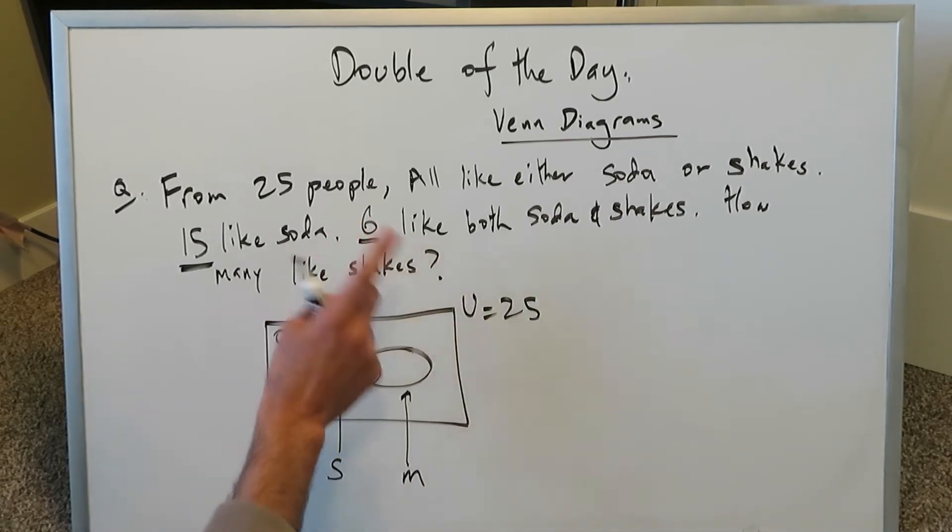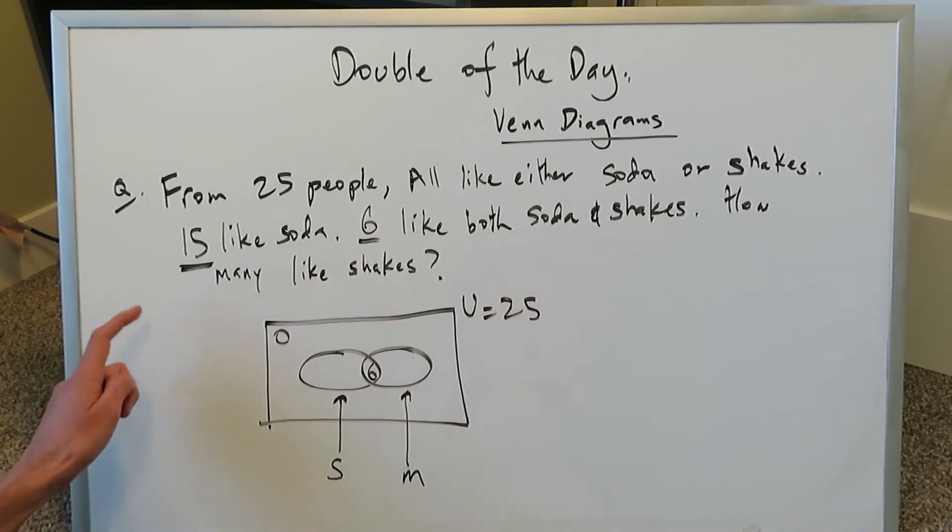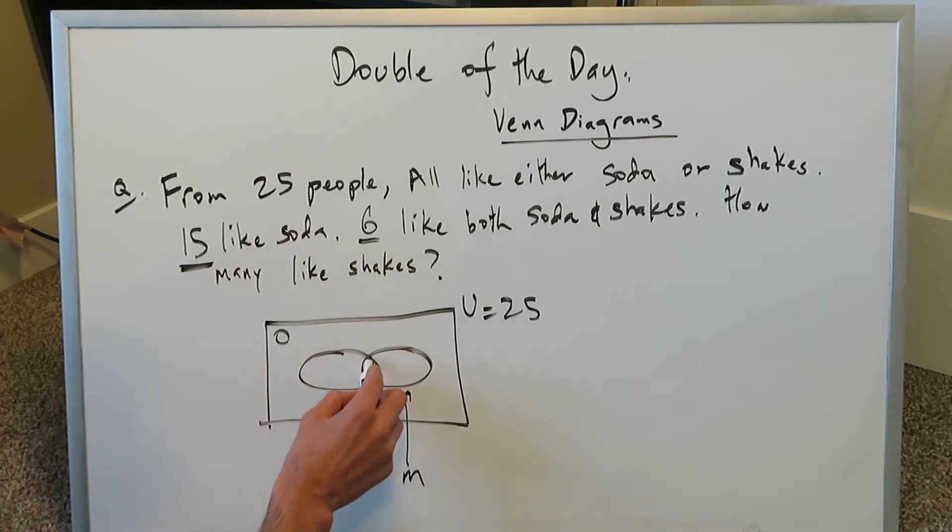We happen to know 6 like both soda and shakes, so that represents the number right here in the intersection because they like both soda and milkshakes. We know 15 like soda. This entire bubble represents soda: 15 of those like soda but 6 of those also like milkshakes.